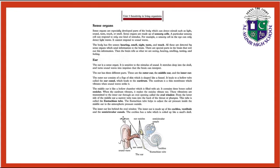The outer ear leads to a hollow tube called the ear canal, which leads to the ear drum. The ear drum is a thin membrane which vibrates when sound waves strike it. The middle ear is a hollow chamber which contains three bones called ossicles. When the ear drum vibrates, it makes the ossicles vibrate too.